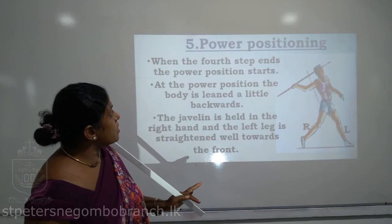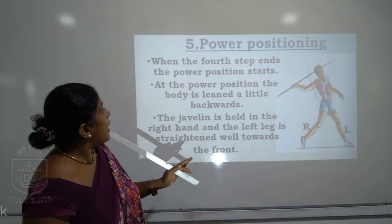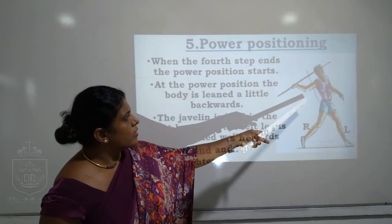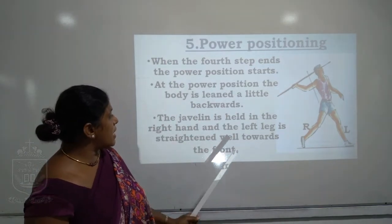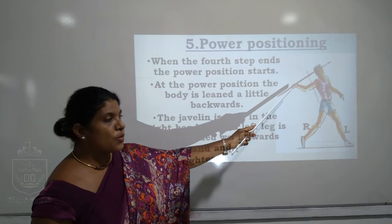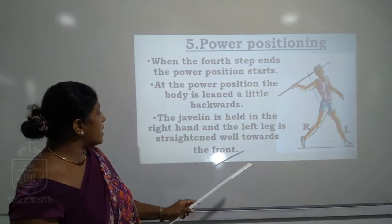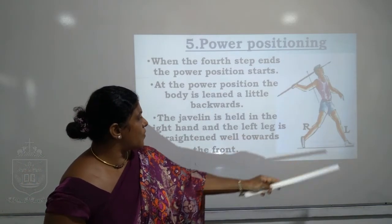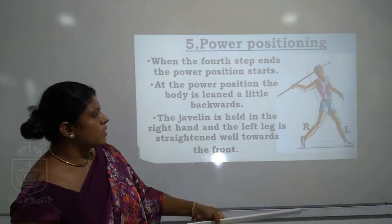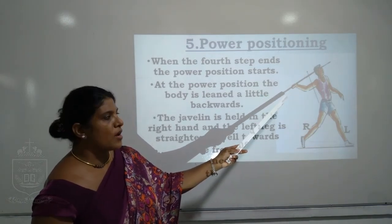Fifth: power positioning. When the fourth step ends, the power positioning starts. At the power position, the body is leaned a little backward. The javelin is held in the right hand, and the left leg is straightened well towards the front. The thrower pulls the javelin with the right hand.